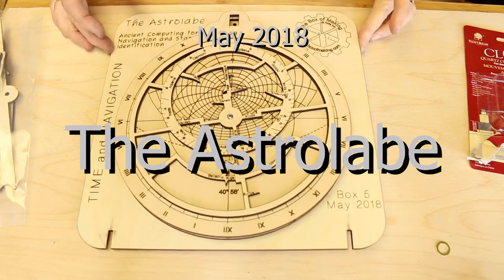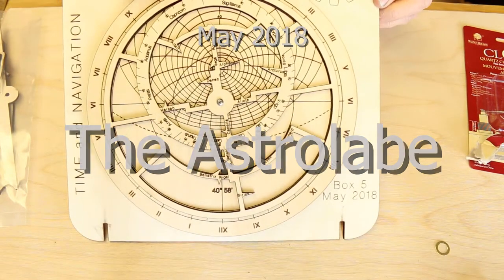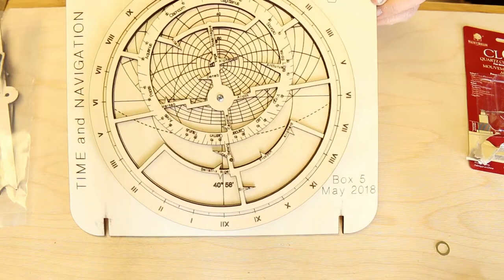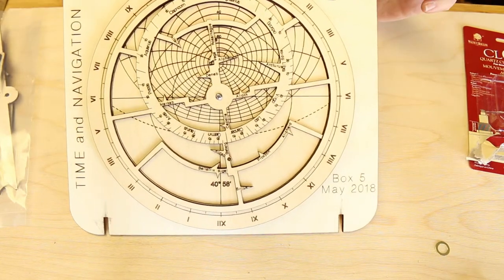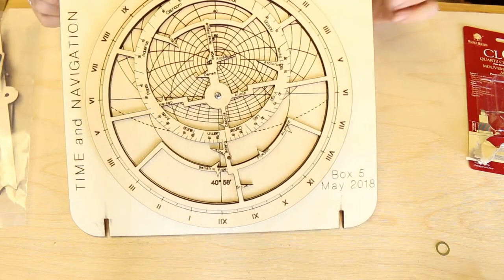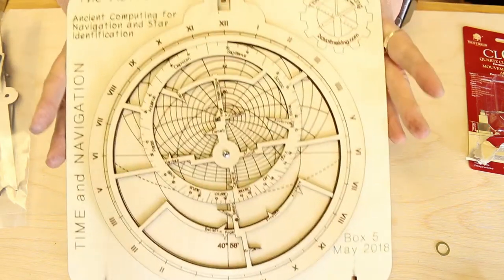When you opened your box of making, you saw this thing on top, and maybe it had spun a little bit, but you saw a pair of plates and some pieces and a sign that was labeled the astrolabe.